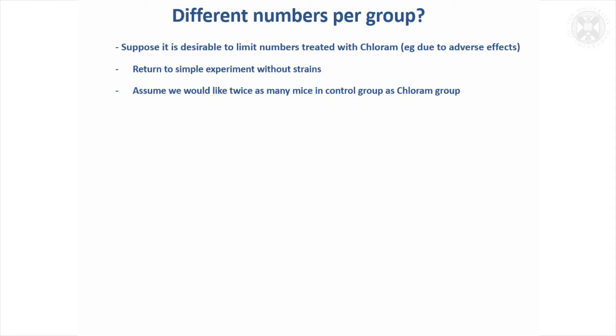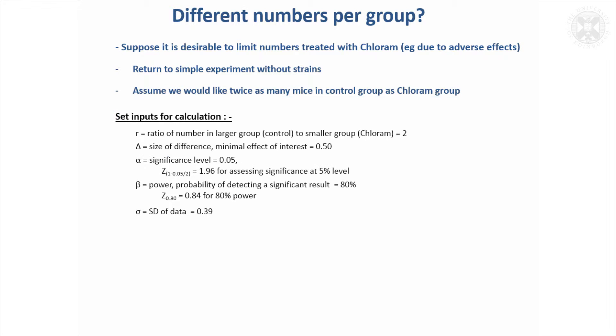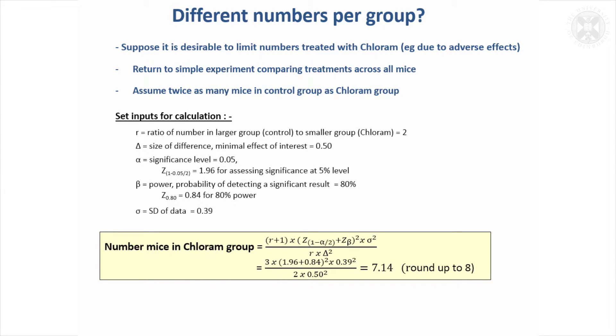So if we go back to the simple experiment we had with just comparing chloram with control without the strains, and assume that perhaps we'd like to have twice as many mice in the control group as the chloram group, to reduce the number of mice that are exposed to the new treatment, then it is possible again to adapt the calculation.